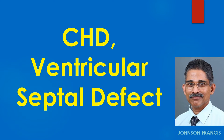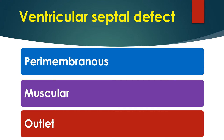In this lecture, we will review congenital heart disease — ventricular septal defect. Ventricular septal defects can be divided into perimembranous, muscular, inlet, and outlet VSDs depending on the location. Of these, perimembranous VSDs are the commonest.